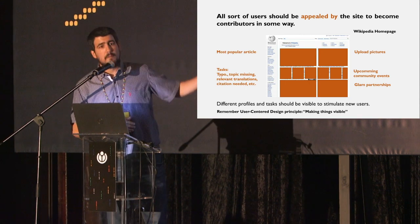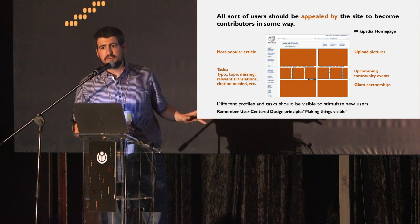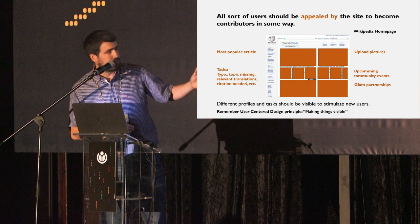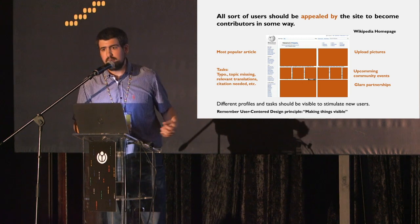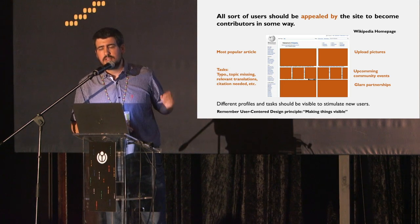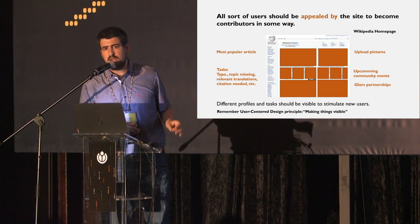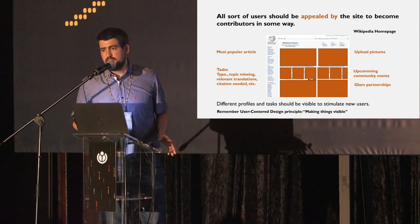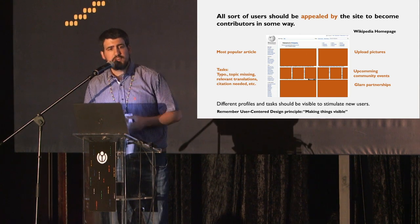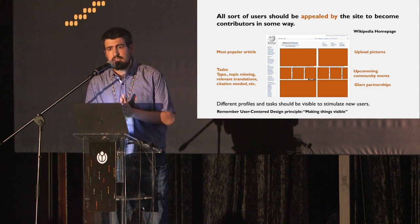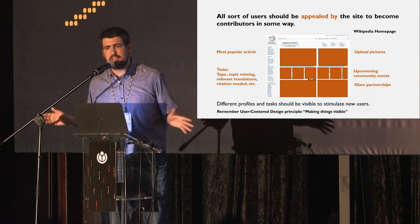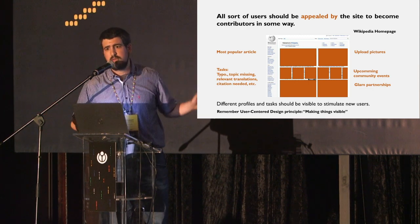I'm thinking about the homepage as a page much more diverse than it is now. It could include calls to action for uploading pictures, community events, topics that are missing in a language, or translations. These are tasks that would call on the very diverse motivations that users have. Because editors have very different motivations — so if editors have very different motivations, why should we all see the same page?